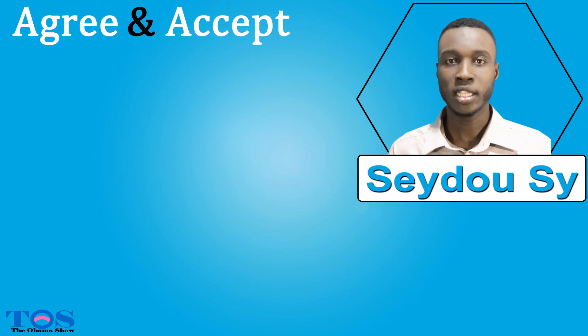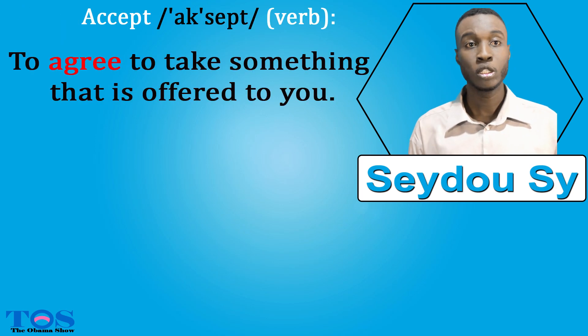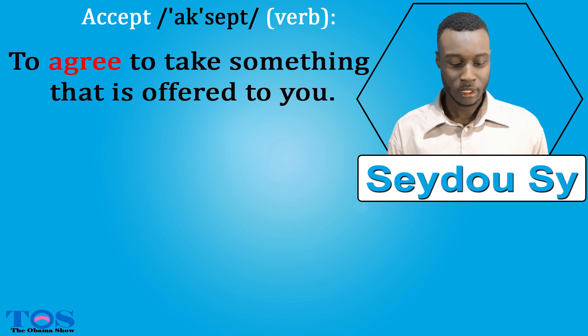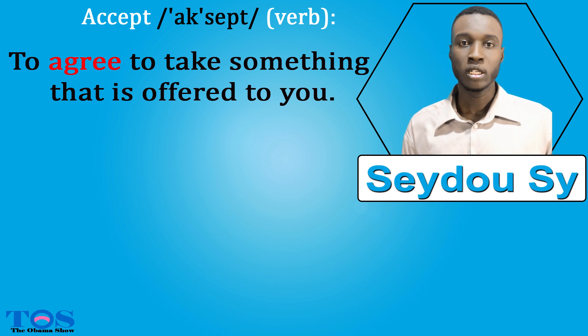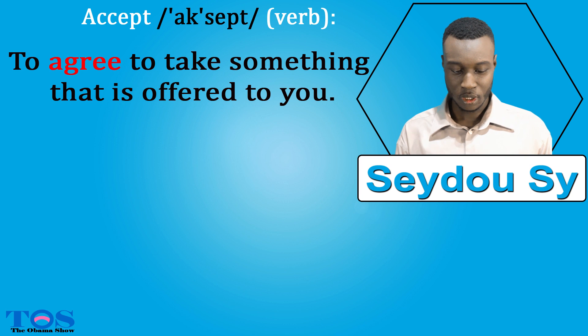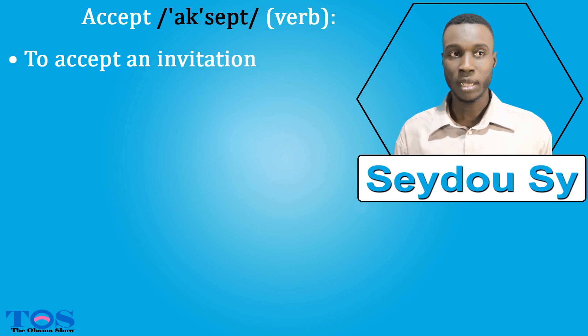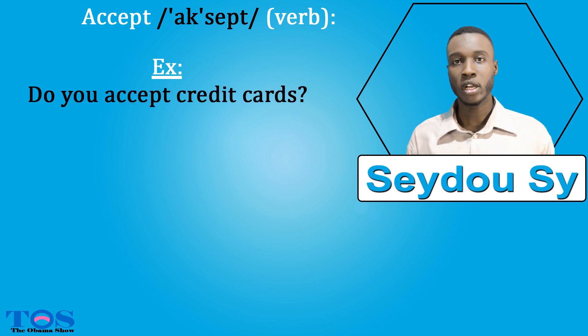The first list of common errors, we're going to talk about 'agree' and 'accept'. Accept is a verb which means to agree to take something that is offered to you. You can say to accept an invitation, to accept a job. For example, do you accept credit cards?